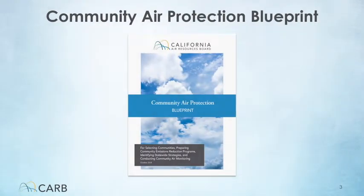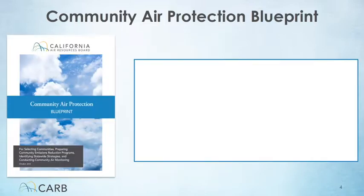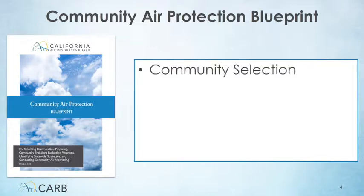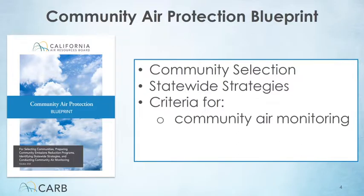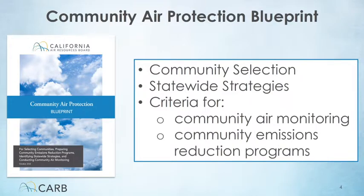The Board approved the Community Air Protection Blueprint in September of 2018. The blueprint covers community selection, new statewide strategies, and criteria for community air monitoring and emission reduction programs. The blueprint establishes the minimum requirements any plans developed under AB 617 must follow.